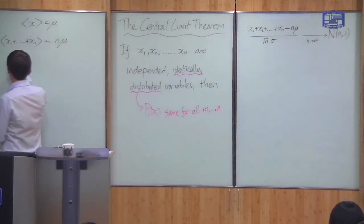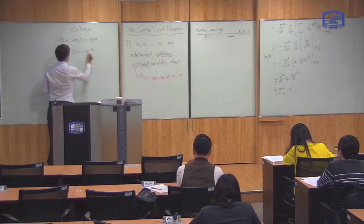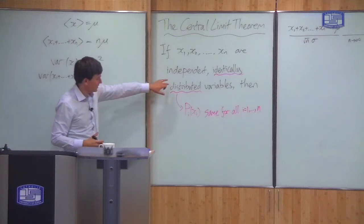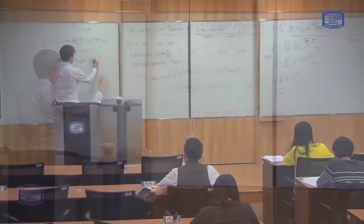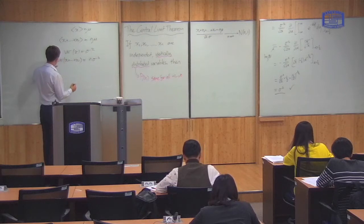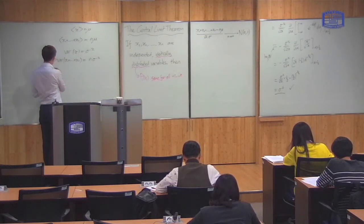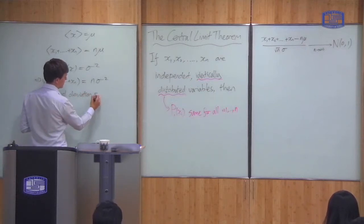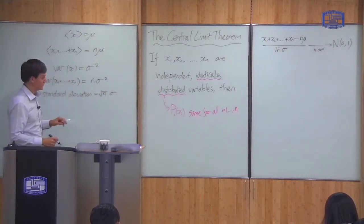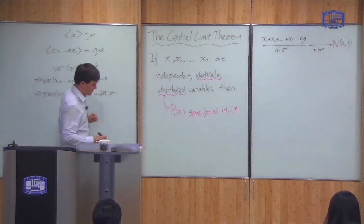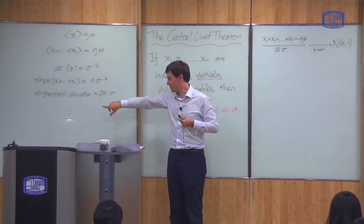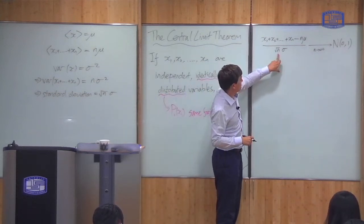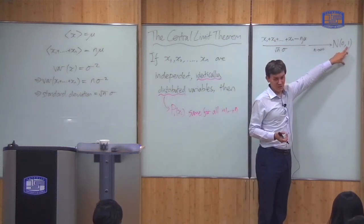We can also talk about the variance. The variance of a single variable is sigma squared. When I take the variance of the sum, because they're independent — that's why it's important that they're independent — this is equal to n times sigma squared. So the standard deviation, which is the width of the distribution, is equal to the square root of n times sigma. The standard deviation is the measure of the width of the distribution.